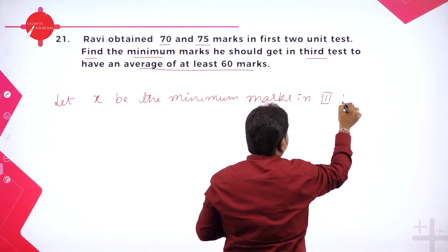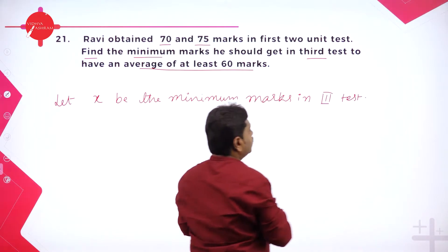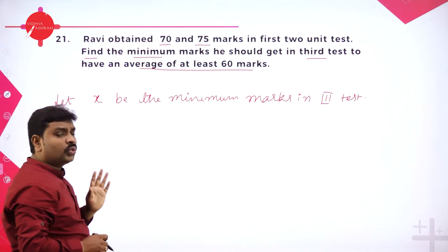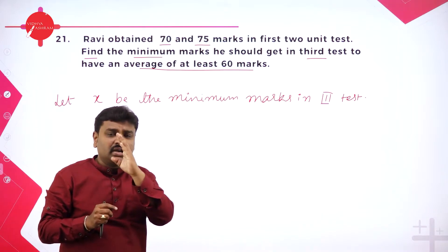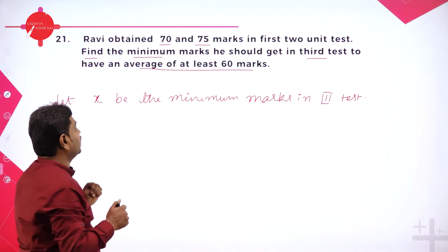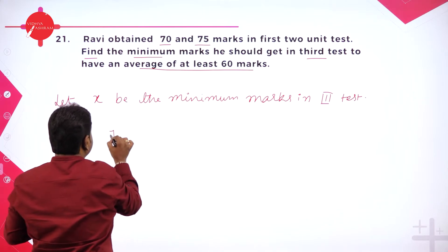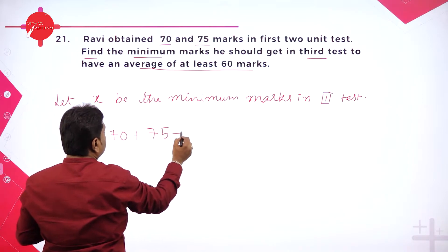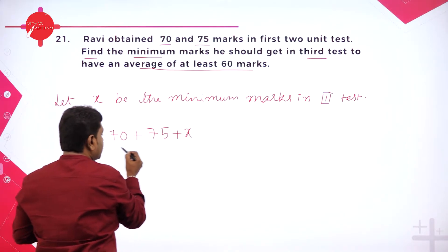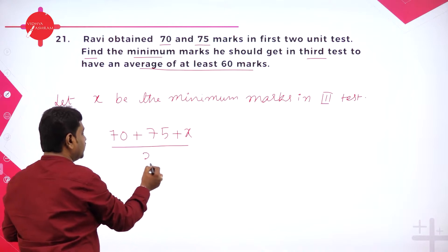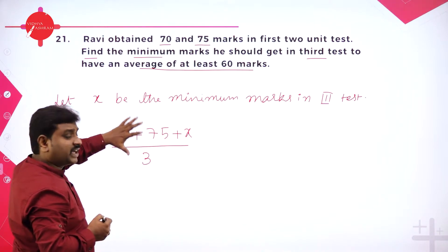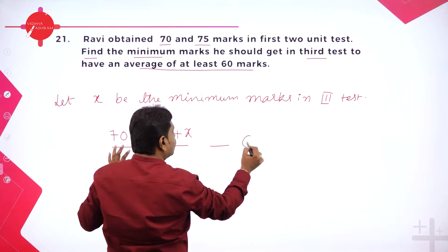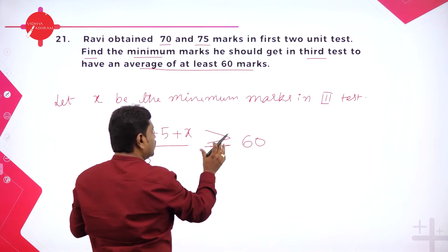This is our assumption for the third test. Now, whatever is given, we'll write it as an inequality. Average means: add all marks and divide by number of tests. Three tests are conducted. First test mark is 70, second test is 75, third test we don't know — that's x. Average should be at least 60, meaning 60 or more than 60, so average should be greater than or equal to 60.